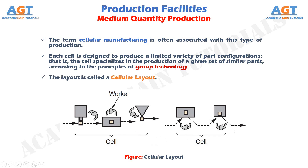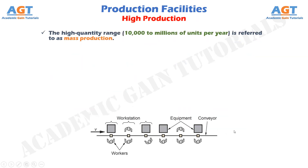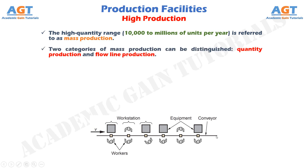The high quantity range, from about 10,000 to millions of units per year, is referred to as mass production. The situation is characterized by a high demand rate for the product, and the manufacturing system is dedicated to the production of that single item. Two categories of mass production can be distinguished: quantity production and flow line production.